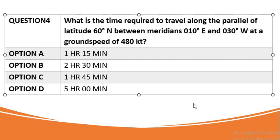The question states: what is the time required to travel along the parallel of latitude 60 degrees north between meridians 10 degrees east and 30 degrees west at a ground speed of 480 knots? Four options are as indicated.